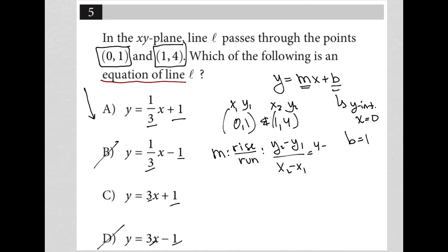So this becomes 4 minus 1 over 1 minus 0, which is 3 over 1, which means my slope is positive 3, which means I should have positive 3 for slope and a positive 1 for y-intercept, which means choice c is the correct answer.